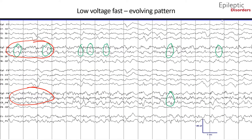The third page of this seizure shown in bipolar montage represents further evolution of the right frontal seizure, with initial low-voltage fast activity seen in previous pages evolving to more polymorphic sharply contoured delta activity at the beginning of this epoch, which then evolves into higher-amplitude quasi-rhythmic delta activity with embedded sharp waves outlined by the green circles.